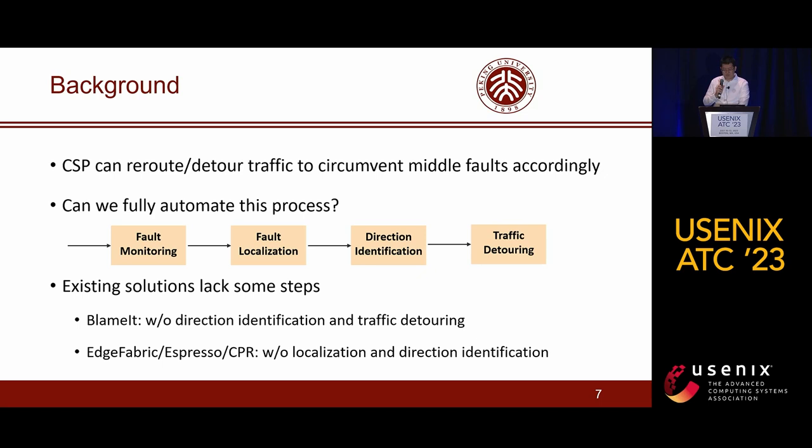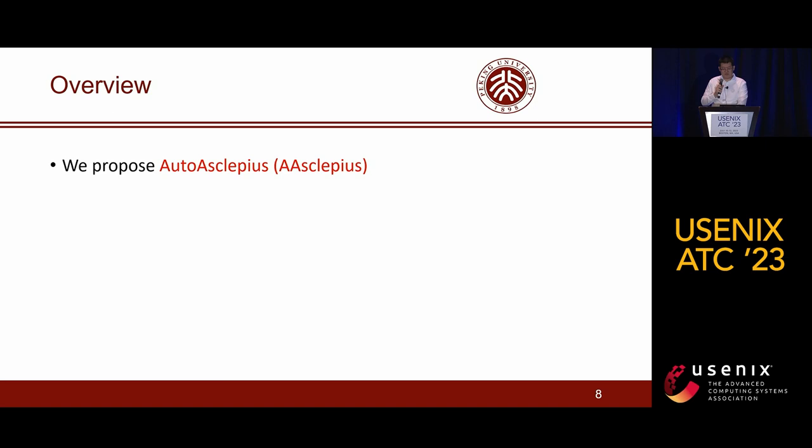Among existing solutions, BlameIt takes fault direction identification and traffic detouring. HFabric, Expresso, and CPR take fault localization and direction identification. In this work, we propose AutoArcical Appeals, the first system that automates the entire process as well as identifies fault direction.